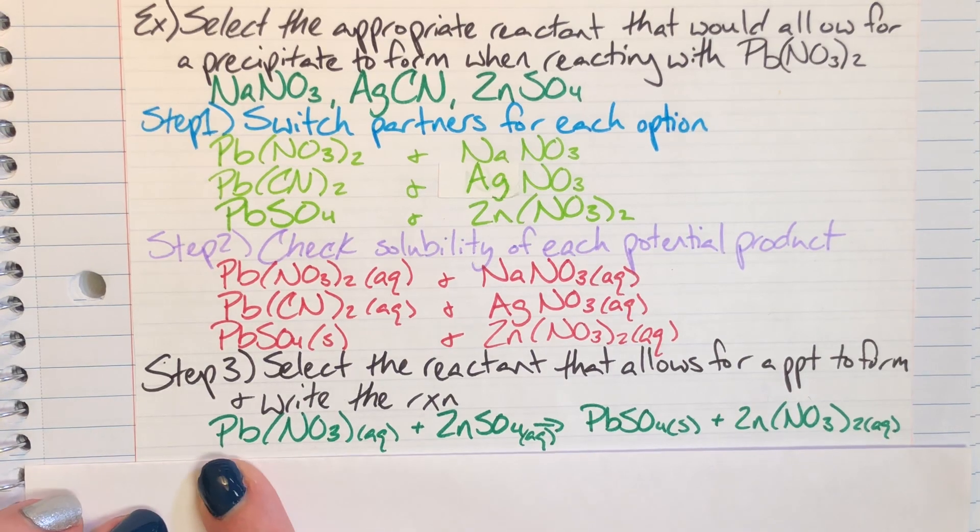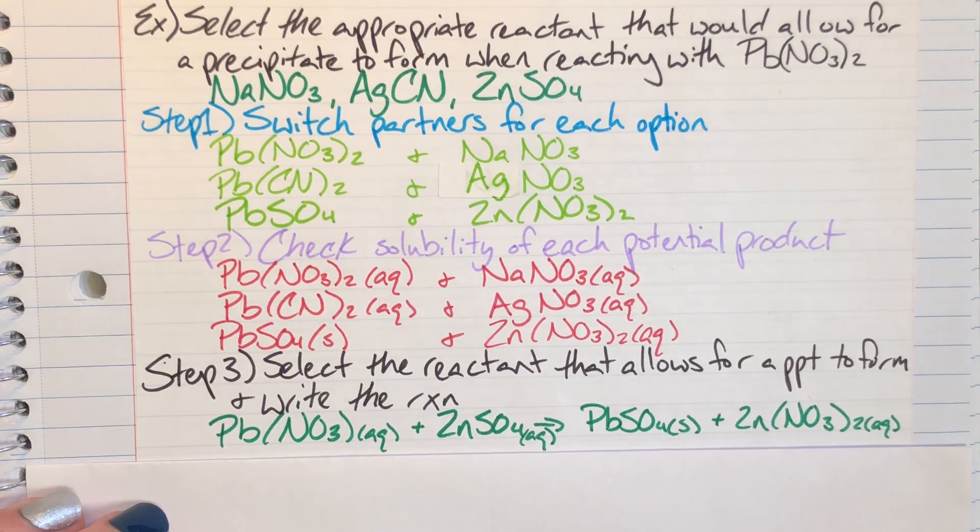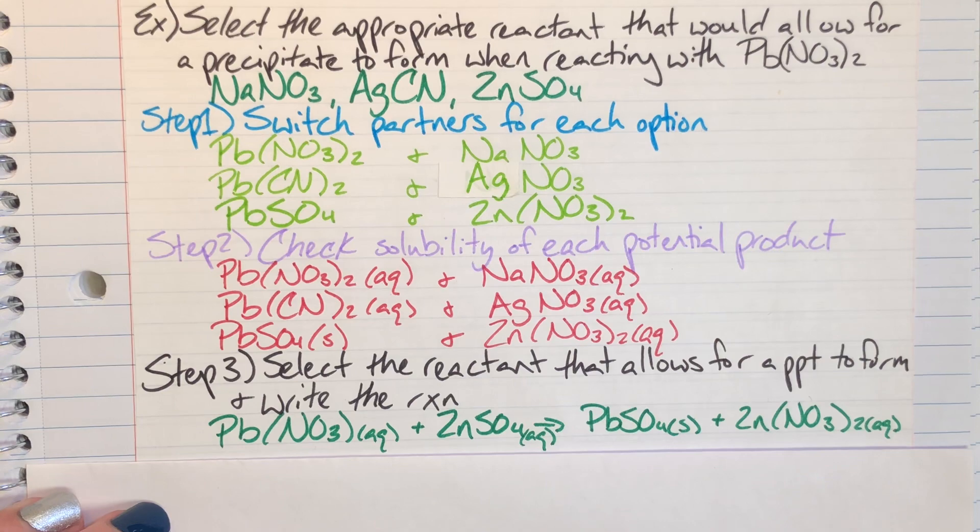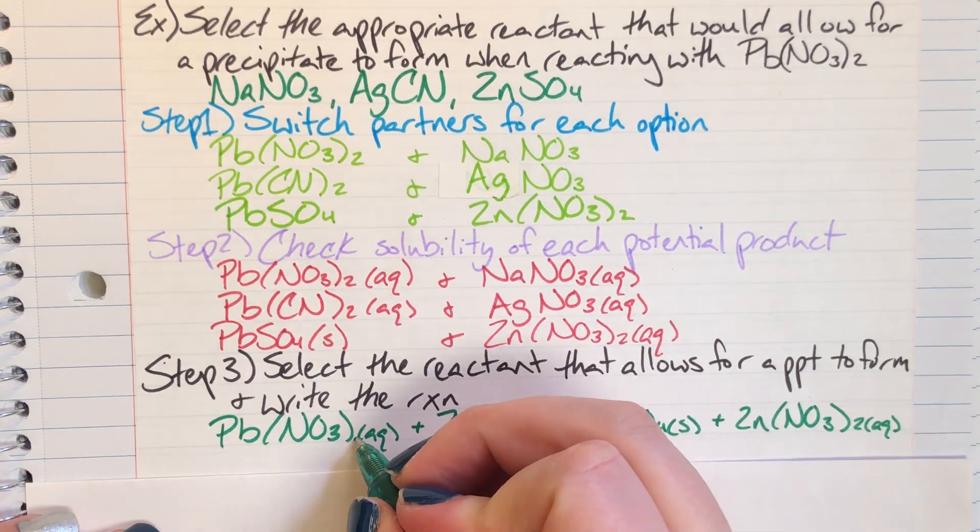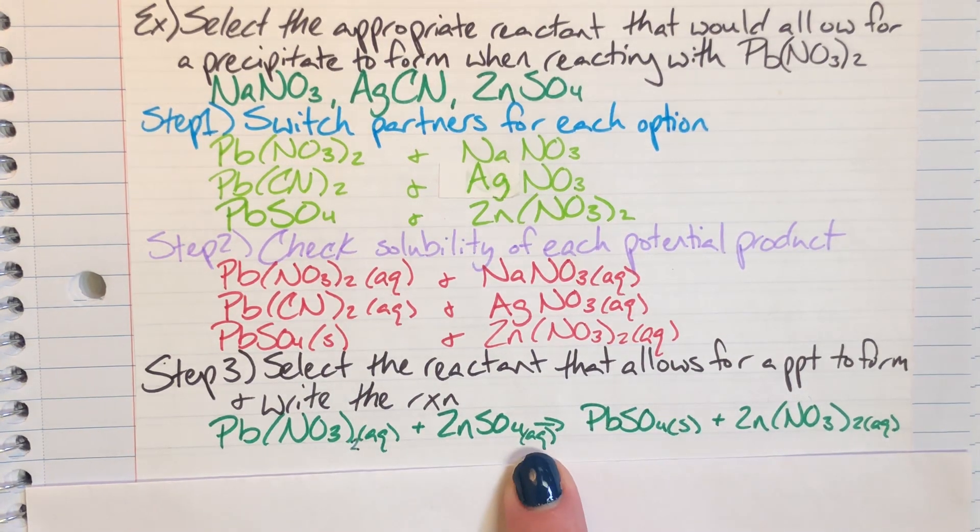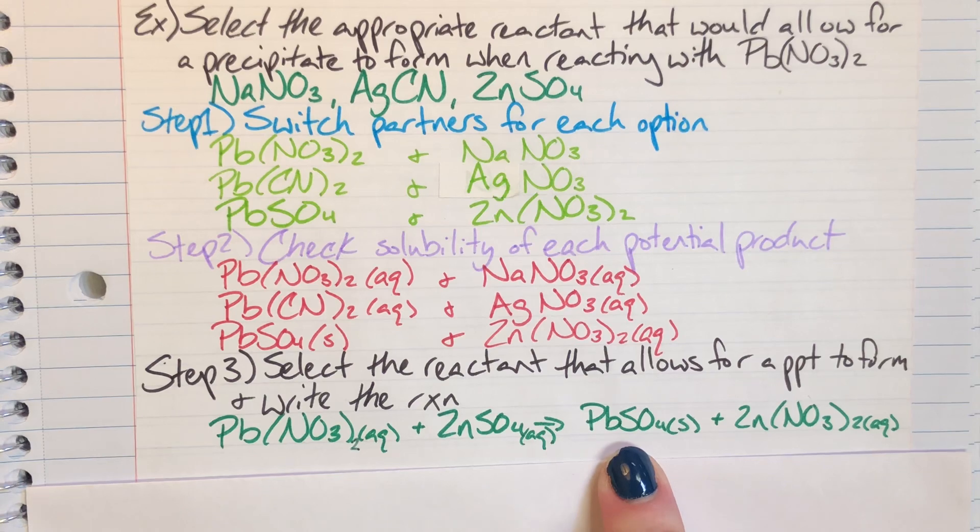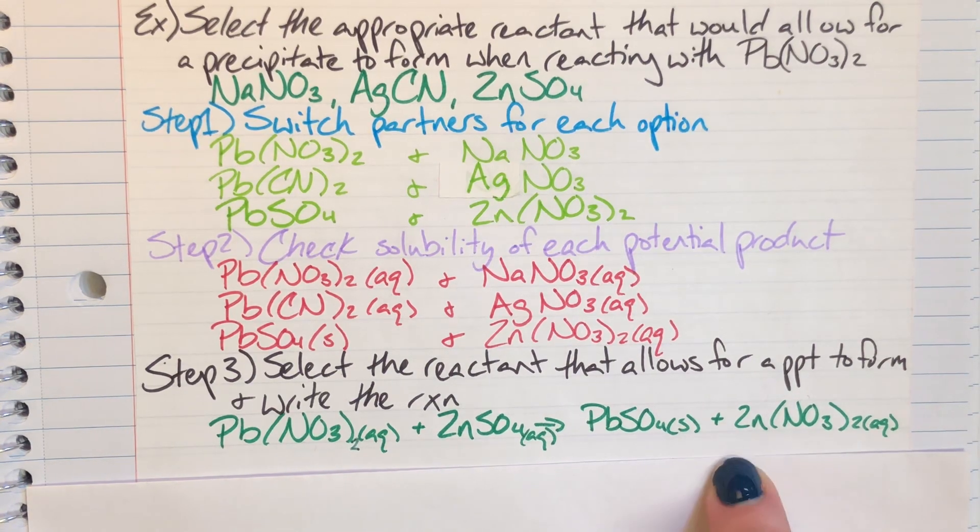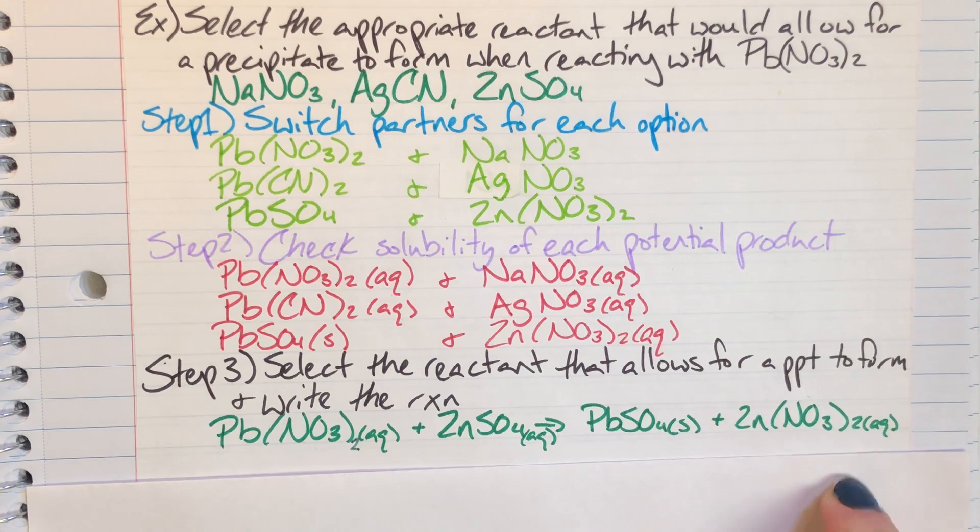So I have the lead(II) nitrate - which I forgot to write my 2 after nitrate, oops, two goes there - and I am reacting with zinc sulfate, producing lead(II) sulfate, which is my precipitate, and aqueous zinc nitrate.